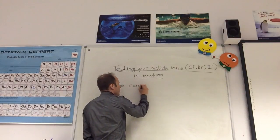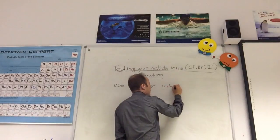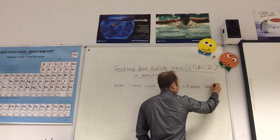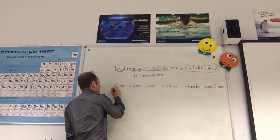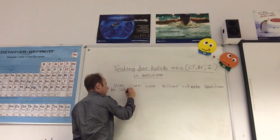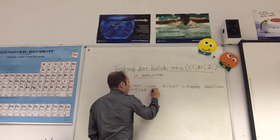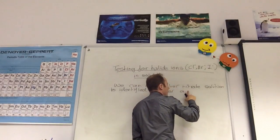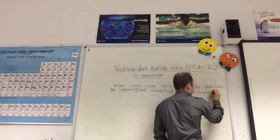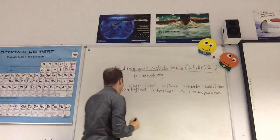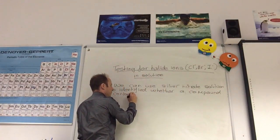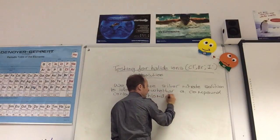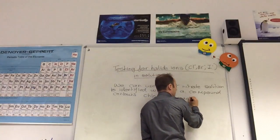We could use silver nitrate solution to identify whether a compound contains chloride, bromide, or iodide ions.